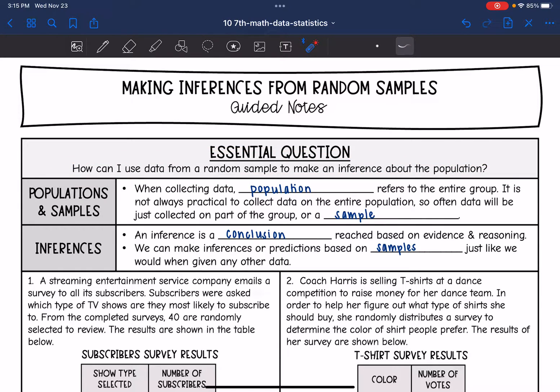So when collecting data, population refers to an entire group. It's not always practical to collect data on the entire population, so often data will be collected on just part of the group or a sample. And then we can use these samples to make inferences. An inference is a conclusion reached based on evidence and reasoning. We can make inferences or predictions based on samples just like we would when given any other data.